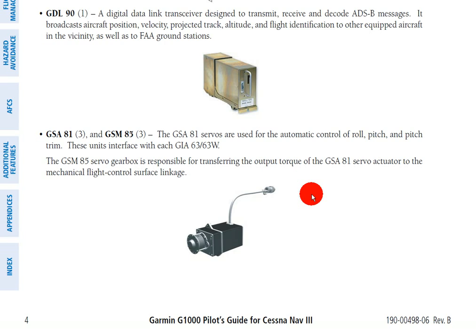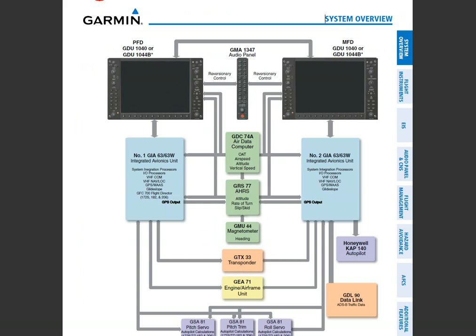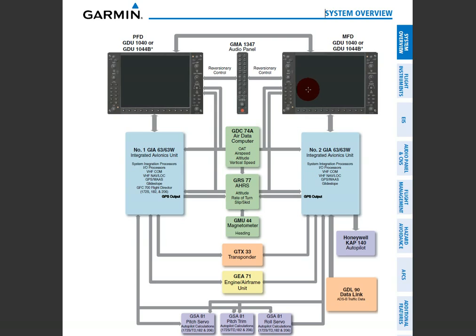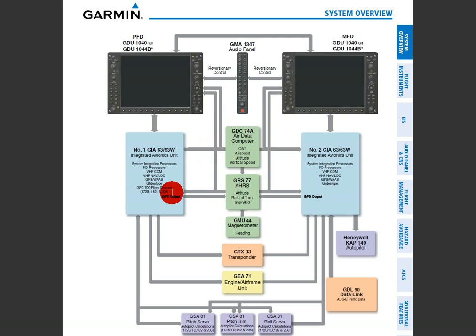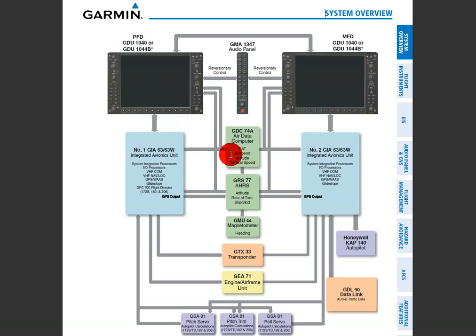We've looked at all the major systems, so now let's look at the diagram that has everything together. We have our displays interconnected through the audio panel. The GIA 63W — the desktop computer or MUX — has all the data piped into it: the air data computer, AHARS, magnetometer, transponder, engine and airframe information, and the autopilot servos. All of that is combined into one channel and sent to the primary flight display. Additionally, the multifunction display side can have the autopilot and a data link for the ADS-B system.